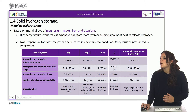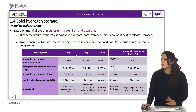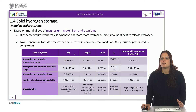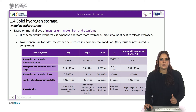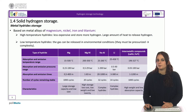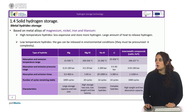In the table, we can see a classification of different hydrides depending on their composition. The first type is metal hydrides based on magnesium, which are among the most studied due to their large storage capacity of hydrogen by weight and low cost. Their absorption and emission temperature range goes from 15 to 550 degrees Celsius. Their main problems are the absorption and emission times and the number of cycles that remain stable.